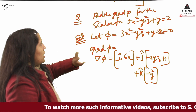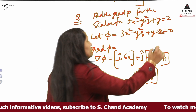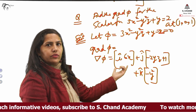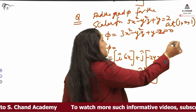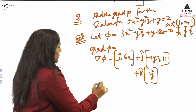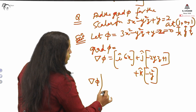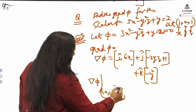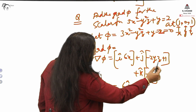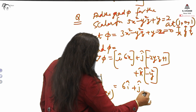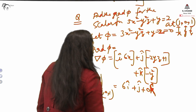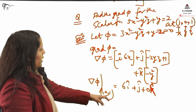Sometimes in problems you are asked to find grad phi of a particular function at a specific point — suppose at (1, 0, 1). After finding grad phi, you put x = 1, y = 0, z = 1 to find the gradient at that particular point. So grad phi at (1, 0, 1): the i component becomes 6i; since y = 0, the j component becomes 0 plus j; and the k component becomes 0k. So the vector lies in the xy-plane only, not in the xyz-plane. This is grad phi at the particular point.